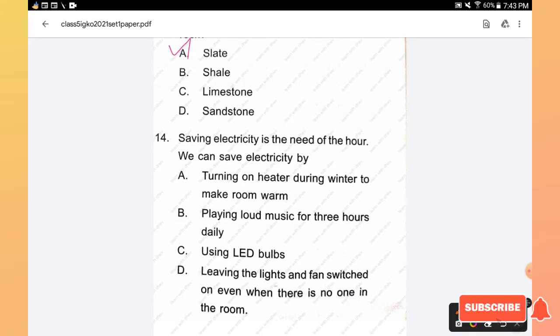Question number 14: Saving electricity is the need of the hour. We can save electricity by: turning on heater during winter to make room warm, playing loud music for three hours daily, using LED bulbs, or leaving the lights and fan switched on even when there is no one in the room. The right answer is we can save electricity by using LED bulbs, option C.